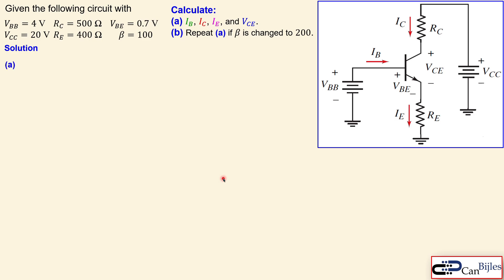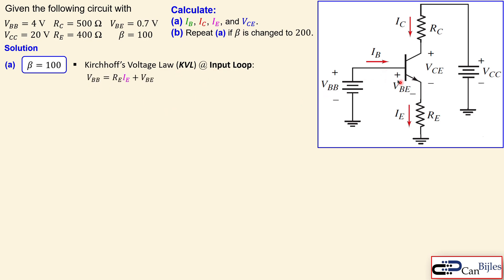For the first step with beta equal to 100, we set up a Kirchhoff voltage law at the input loop: VBB equals VBE plus the voltage across RE. You can see there is no beta dependency here, so substituting the values — four volts, 400 ohms for RE, and 0.7 V for VBE — gives an emitter current of 8.25 milliamps, regardless of beta.